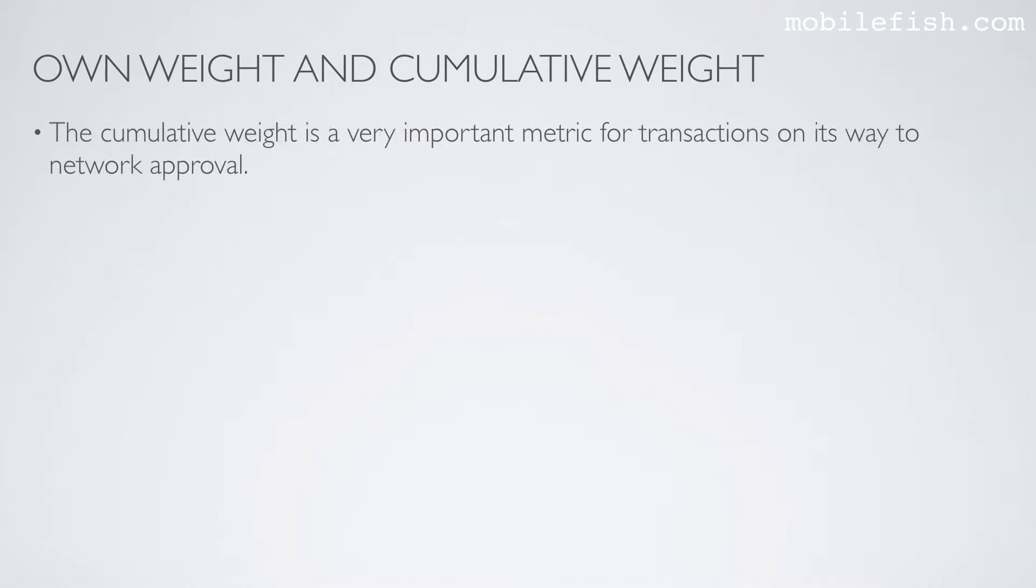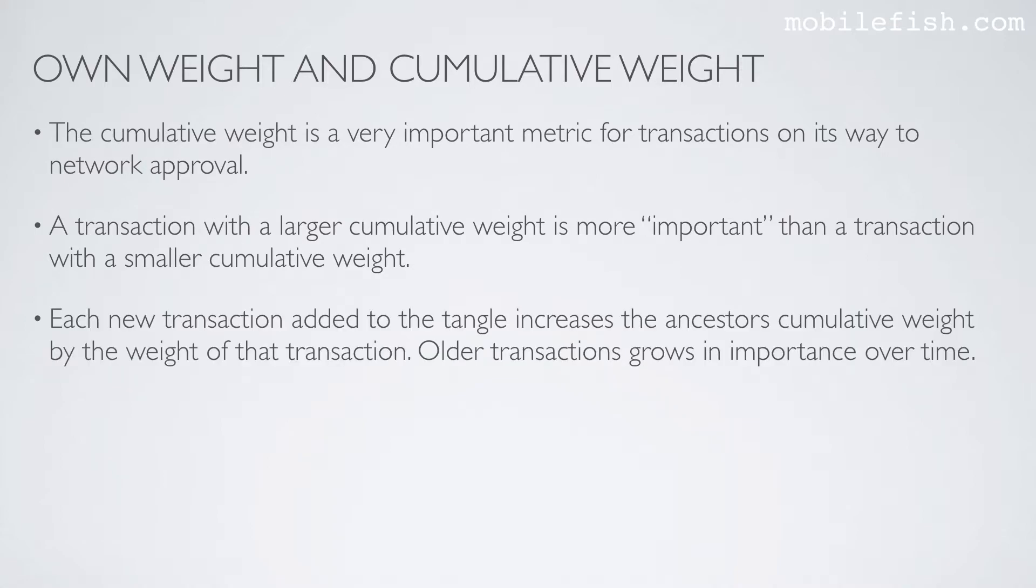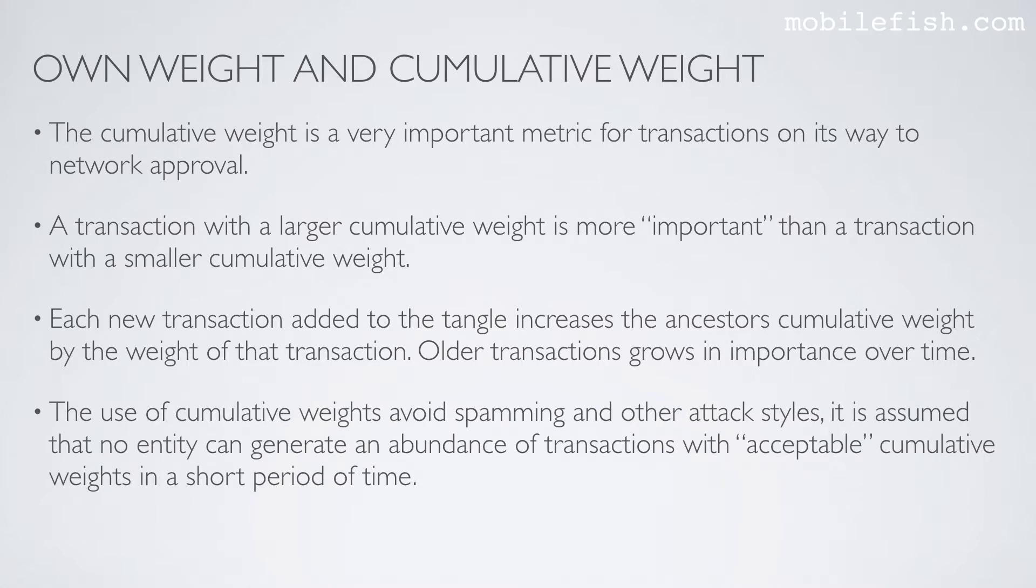The cumulative weight is a very important metric for transactions on its way to network approval. A transaction with a larger cumulative weight is more important than a transaction with a smaller cumulative weight. Each new transaction added to the tangle increases the ancestor's cumulative weight by the weight of that transaction. Older transactions grow in importance over time. The use of cumulative weights avoids spamming and other attack styles. It is assumed that no entity can generate an abundance of transactions with acceptable cumulative weights in a short period of time.